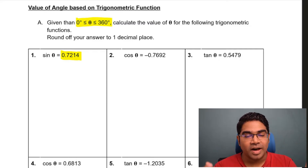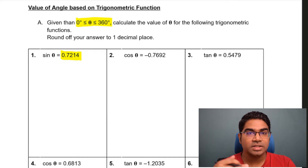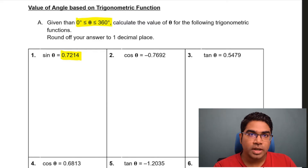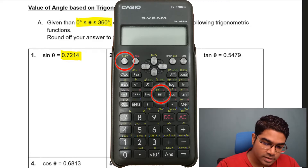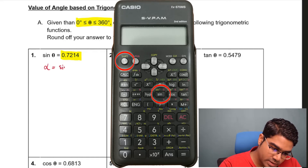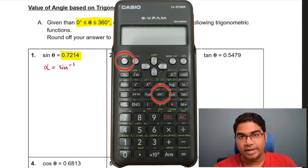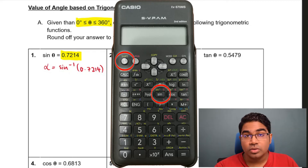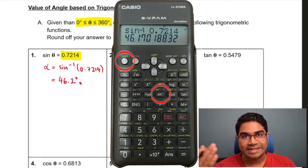The first thing you need to do is to find alpha. To find alpha, use your calculator — find the inverse function for whatever you are looking for. We have sine theta here, so we are going to do inverse sine. Press shift and then press sine. Alpha equals sine inverse of 0.7214, and you will get a value of 46.2 degrees. Always remember, alpha should be between 0 and 90 degrees.